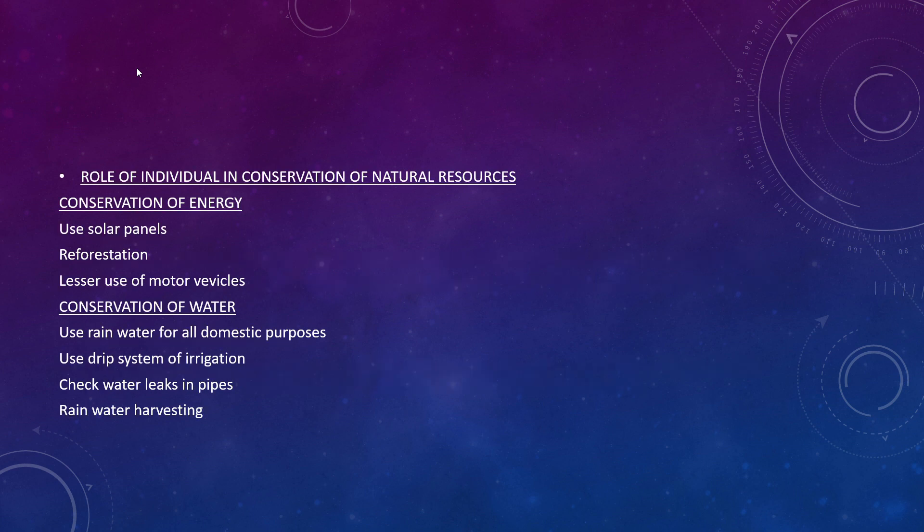The role of the individual in conservation of natural resources: first, conservation of energy. We can use solar panels, plant trees, and reforestation will be another means of energy conservation. Lesser use of motor vehicles is also important because most emissions from motor vehicles are toxic gases like carbon monoxide and sulfur dioxide, which accumulate in the atmosphere and cause pollution.